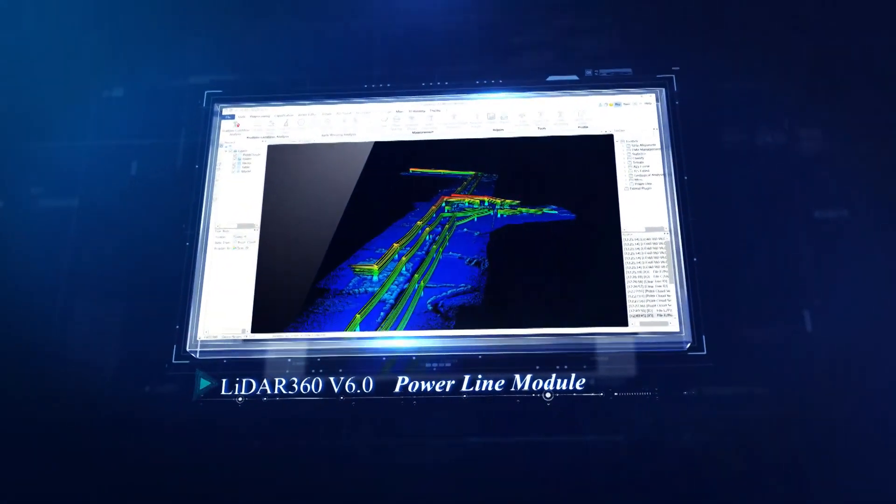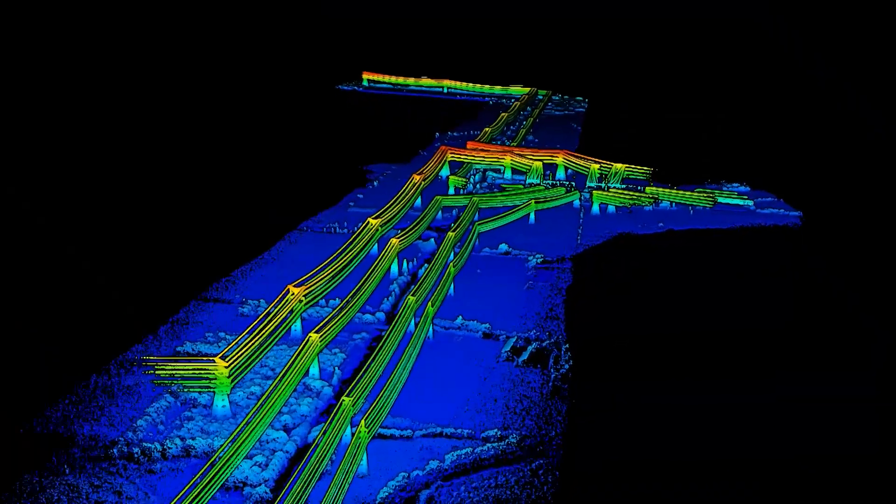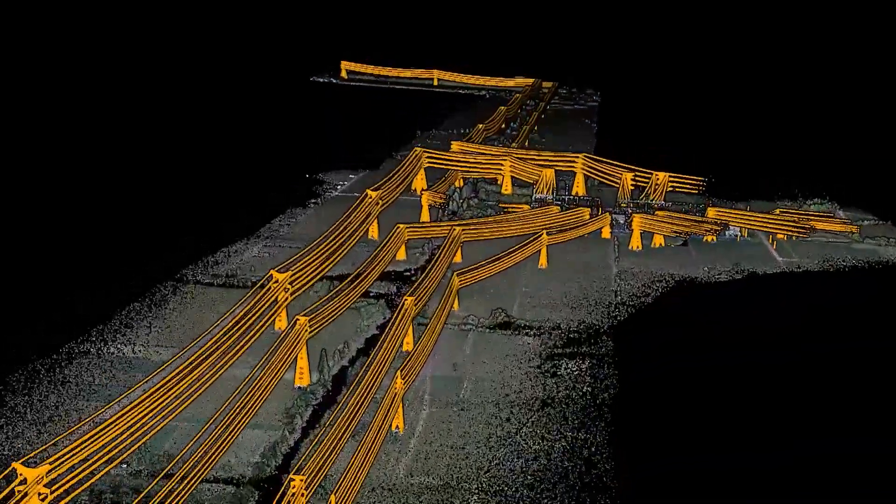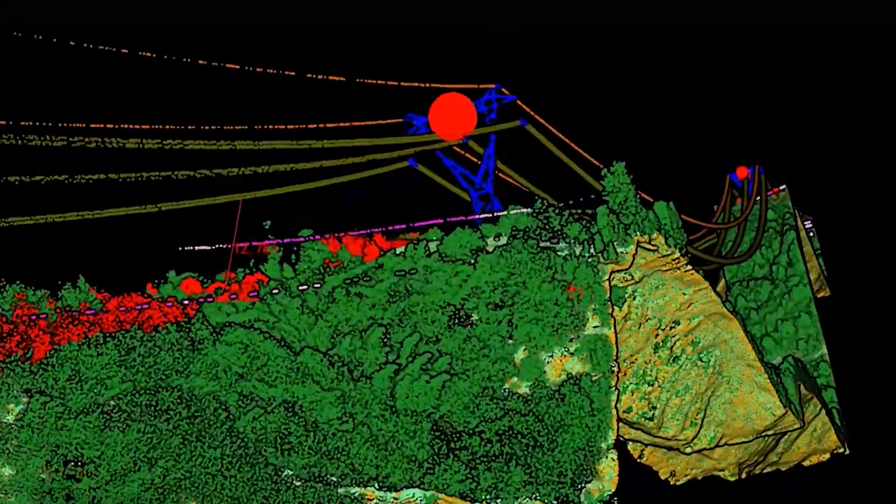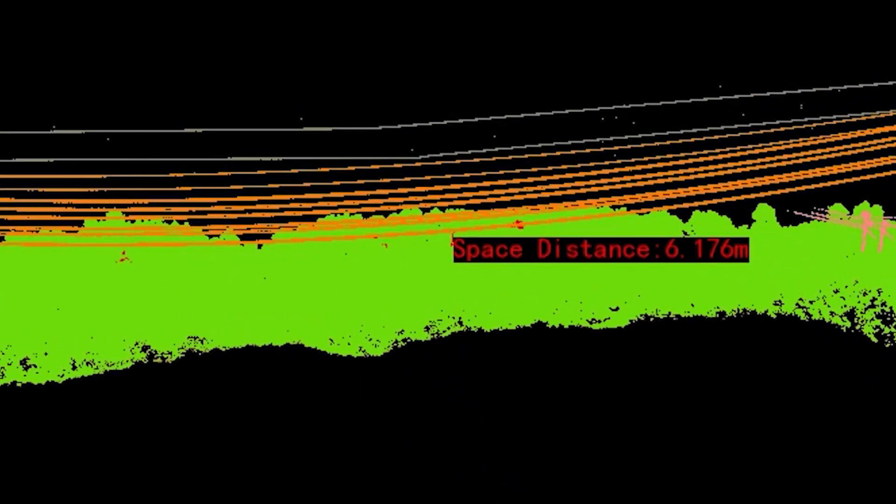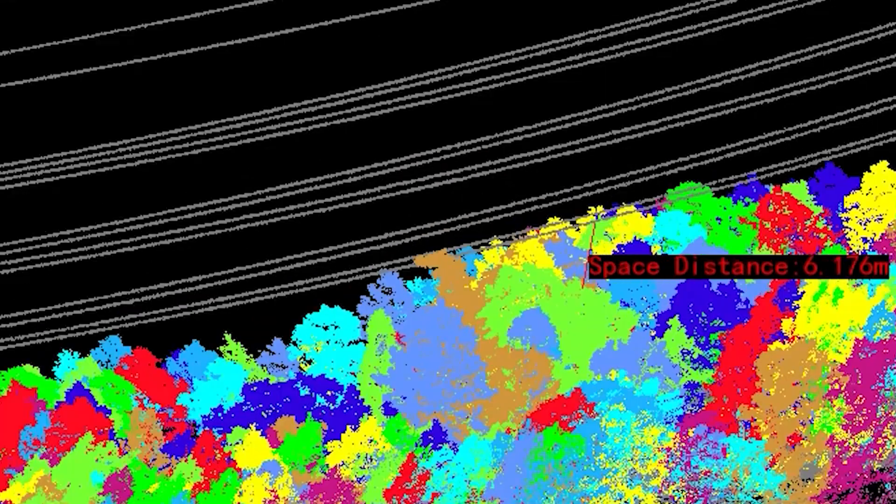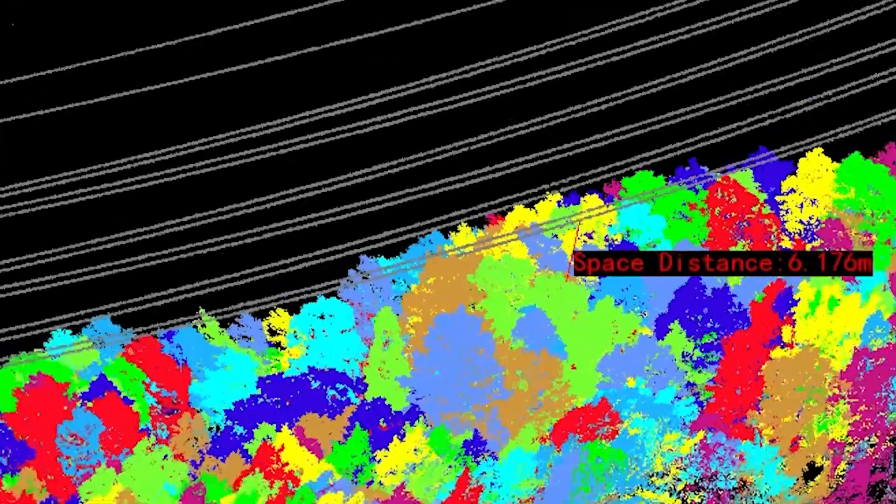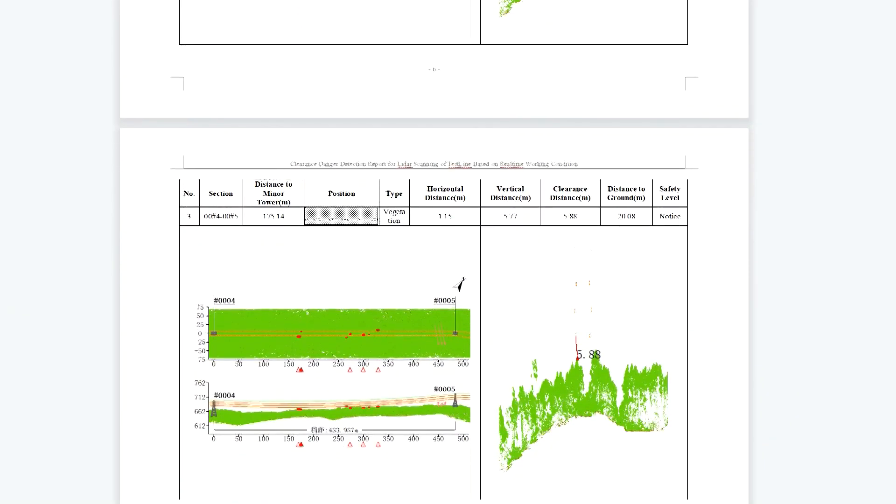The power line module can automatically identify key features such as ground, towers, power lines, houses, vegetation, etc. Hazardous point analysis and real-time operating condition simulation can be performed and reports can be generated.